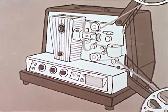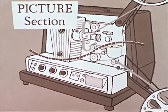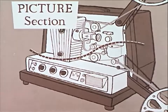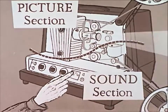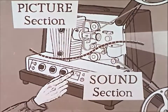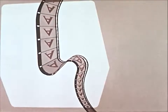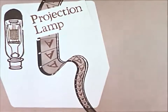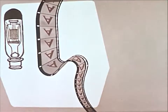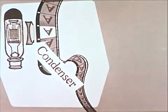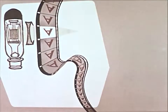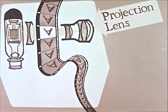A typical motion picture projector consists of two sections, each with a different function. The picture section, which projects the picture from the film to the screen, and the sound section, which reproduces or recreates the sounds which have been recorded on the film soundtrack. As the film moves through the projector, it first enters the picture section. This section consists of the projection lamp, which is a very bright light source. The light is concentrated on a single frame of the film by a condenser lens. The brilliantly illuminated frame of the film is projected by the projection lens onto the screen.